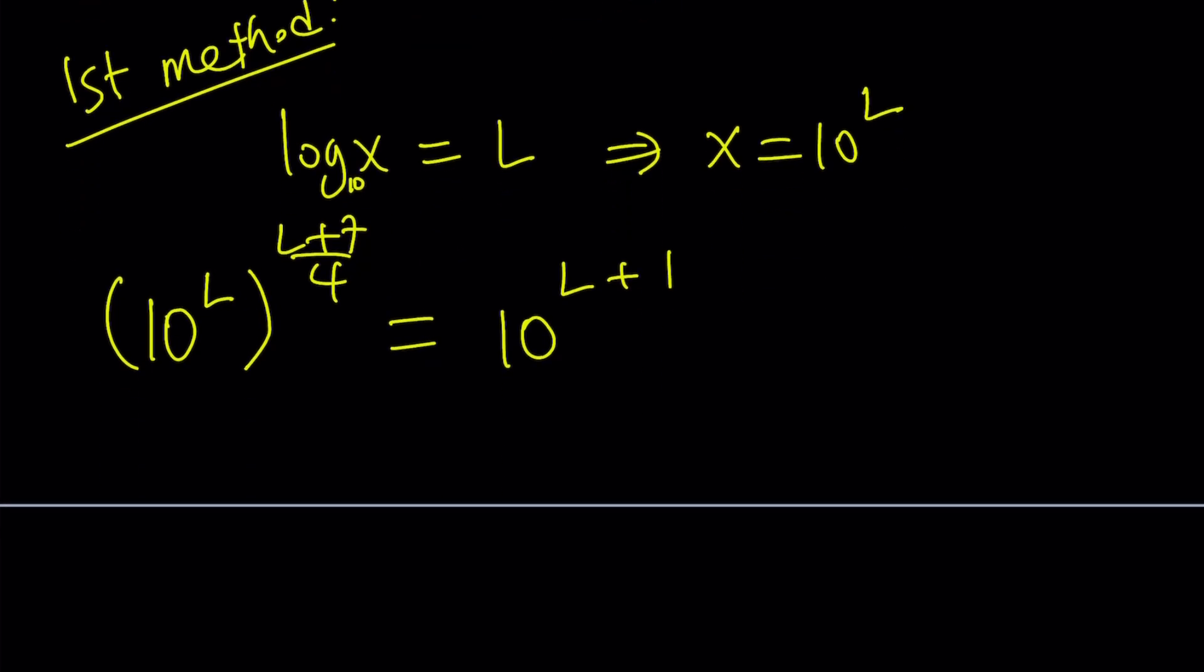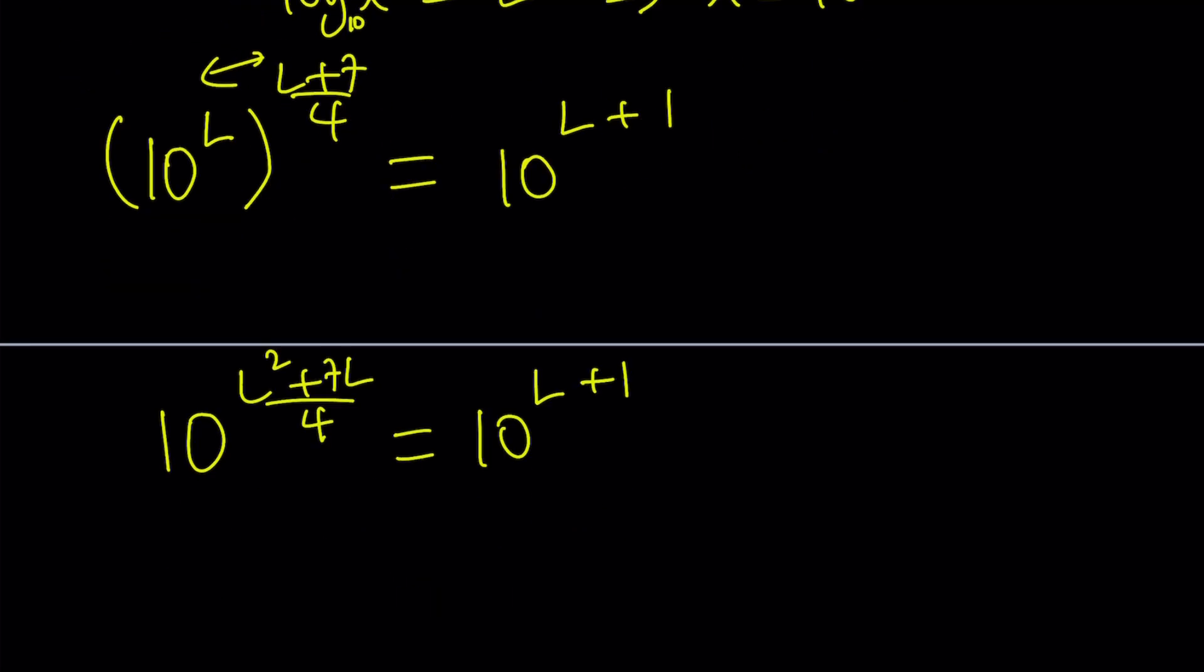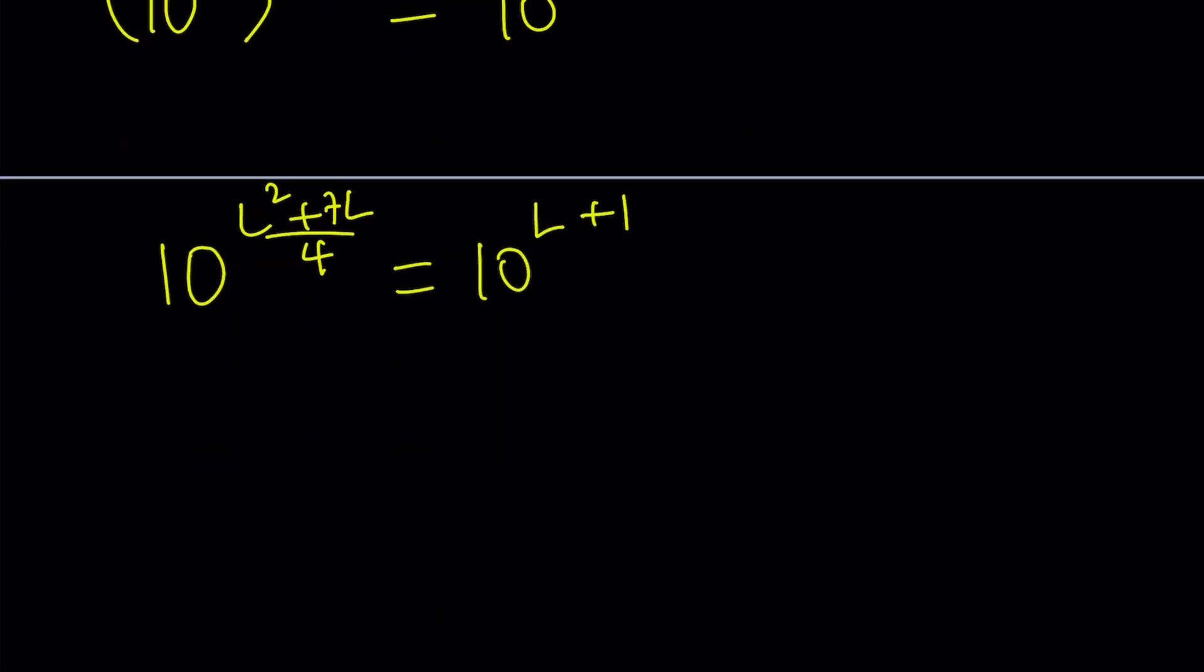Now we have the exponent of an exponent, or power of a power. We can multiply these, which gives us 10 to the power L squared plus 7L divided by 4, equals 10 to the power L plus 1. Now the rest is fairly easy because we have the same bases, and the same exponents must follow. We have to have the same exponents, otherwise these numbers are not going to be equal.